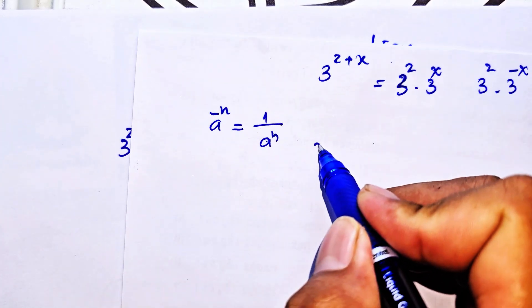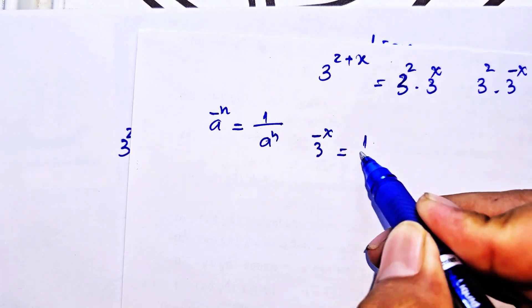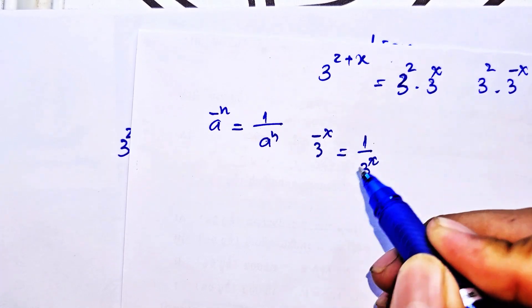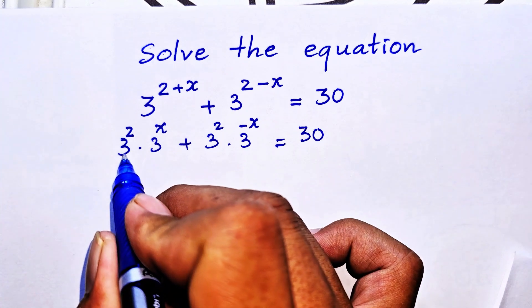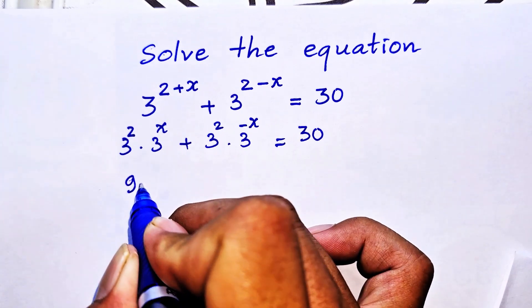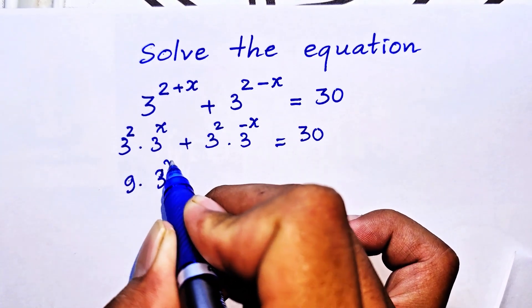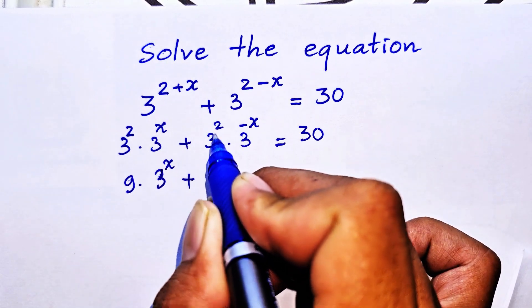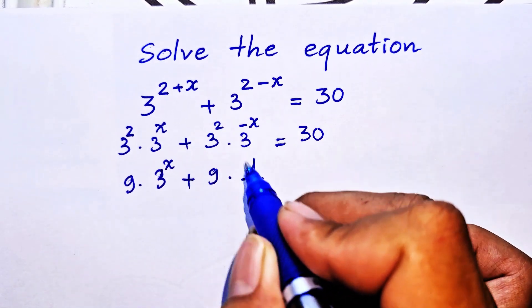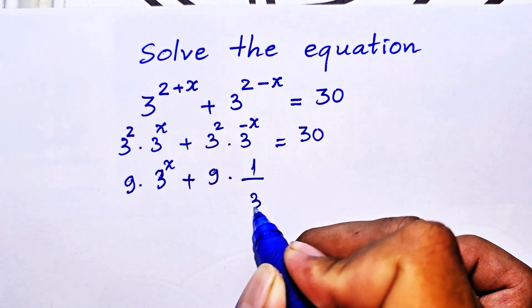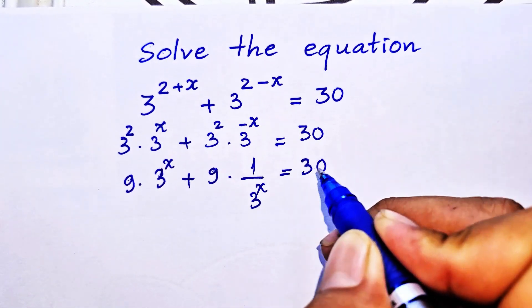Since 3² equals 9, we get 9 times 3^x plus 9 times 3^(−x) equals 30.